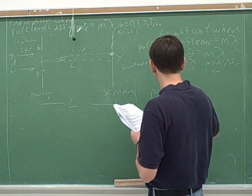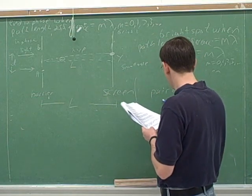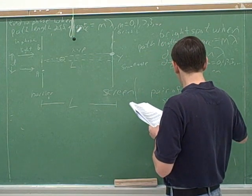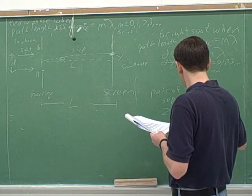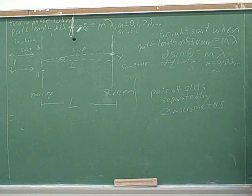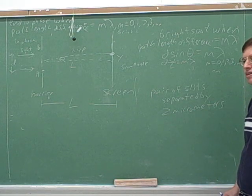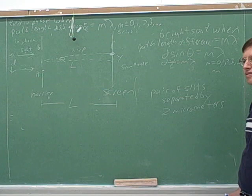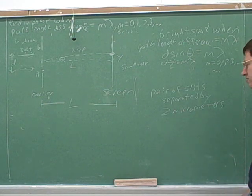Let's say we have a pair of slits separated by 2 micrometers. Which variable is equal to 2? D. Good. Although you might have to do a conversion. How would you convert this into meters? 10 to the negative 6. Yeah, that would be 10 to the negative 6 meters. Micro means 10 to the negative 6.